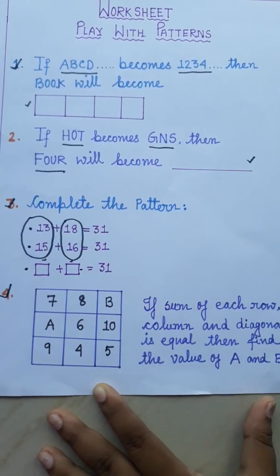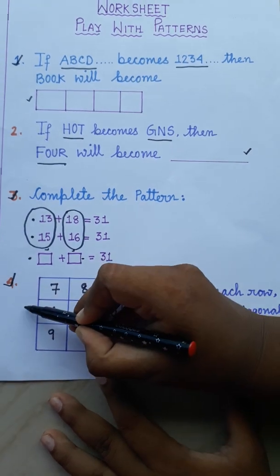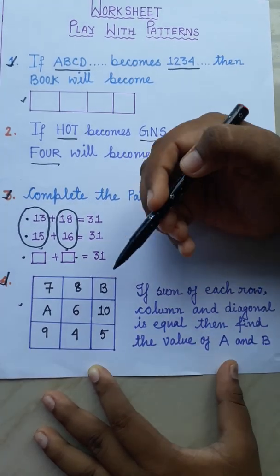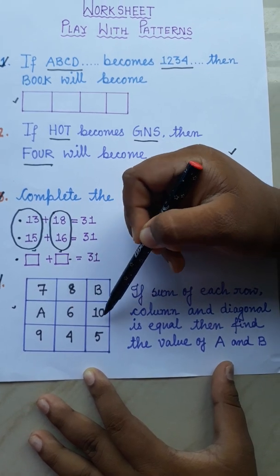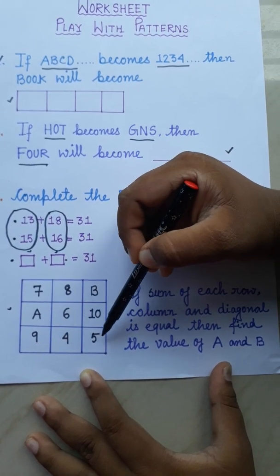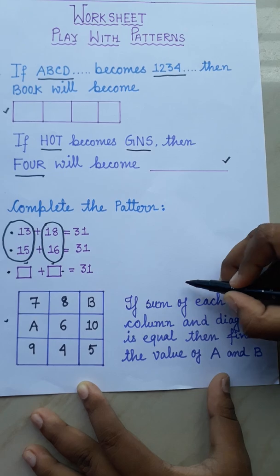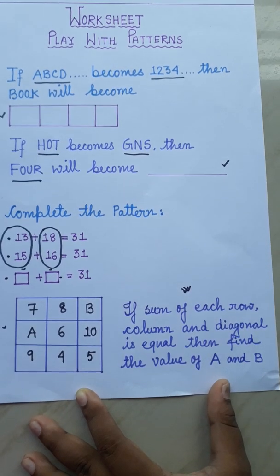Next, if you will go to this one, you can see a magic square is given here with the numbers 7, 8, B, A, 6, 10, 9, 4, 5. And here the rule is given. What is the rule?